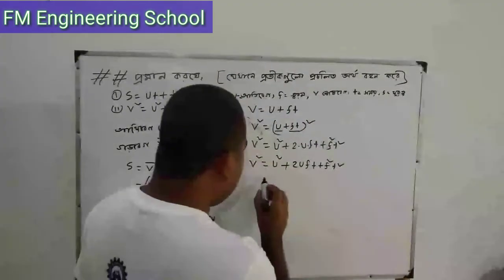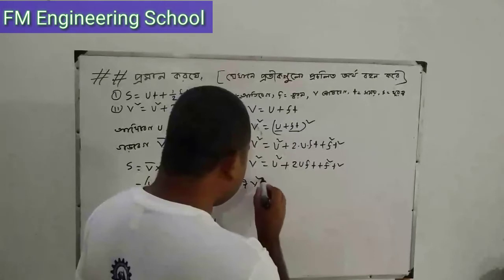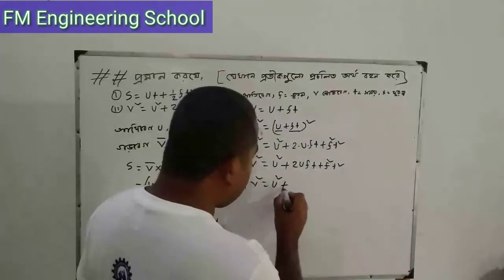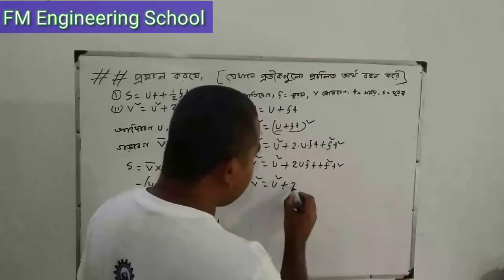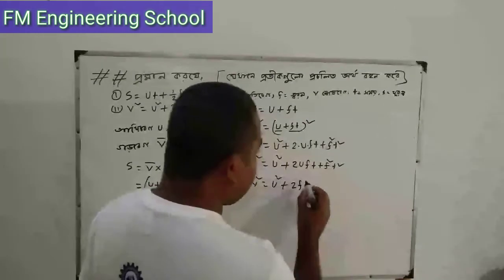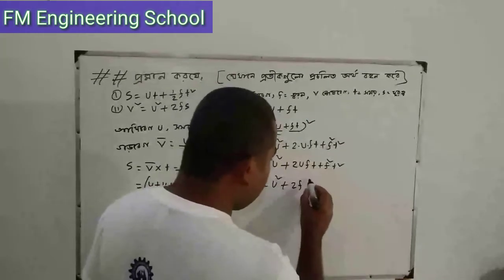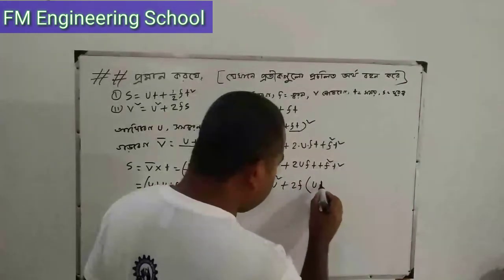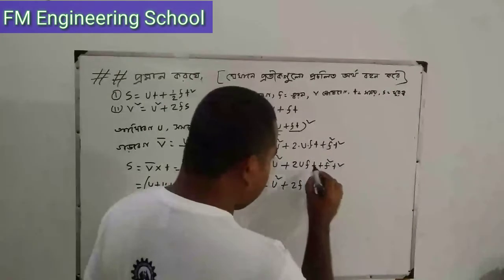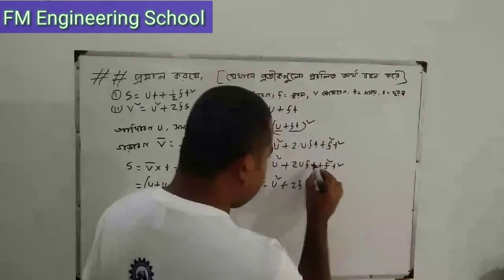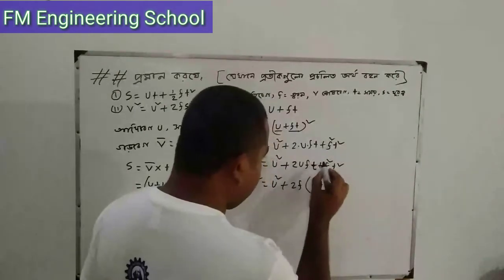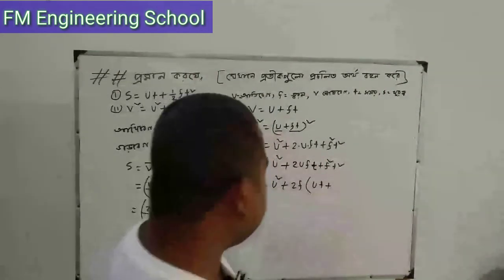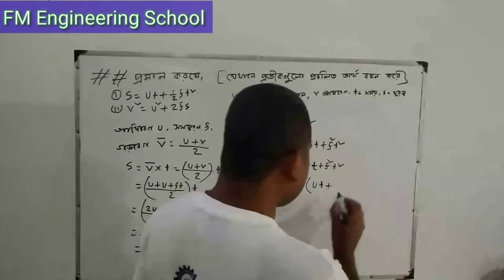We have a square plus 2uF common here. So we have a square plus ut plus s squared plus t. A square plus 2uF.